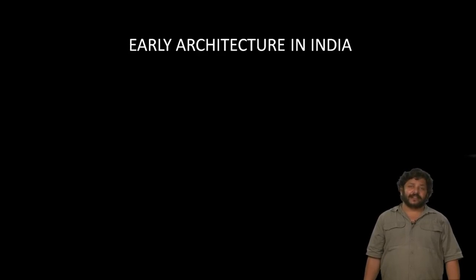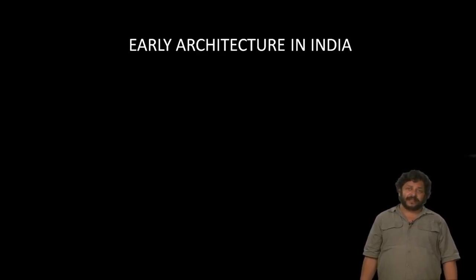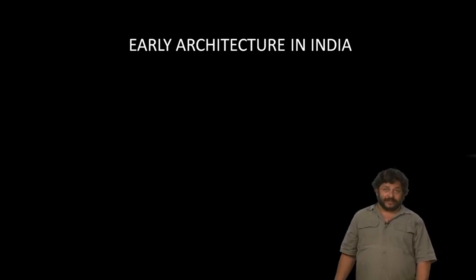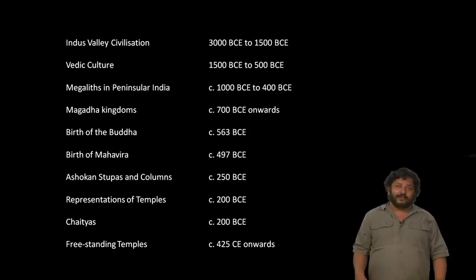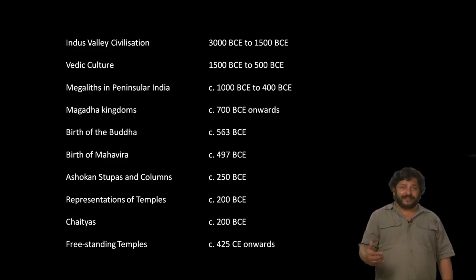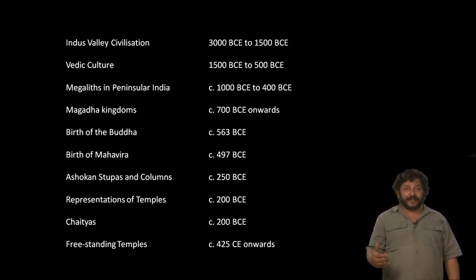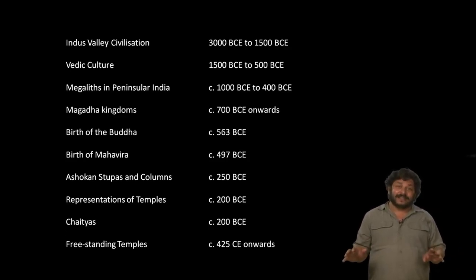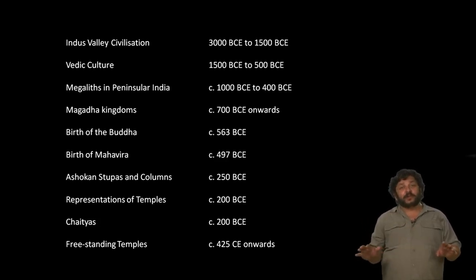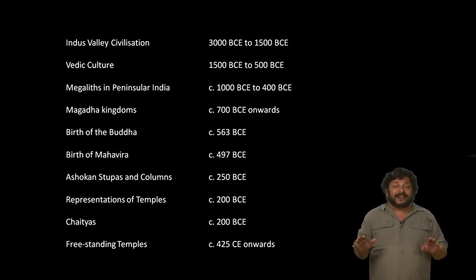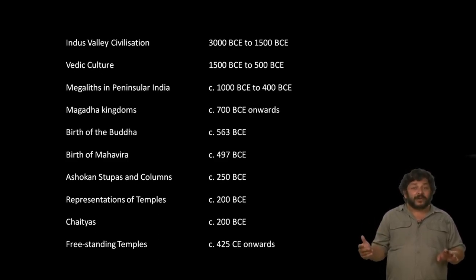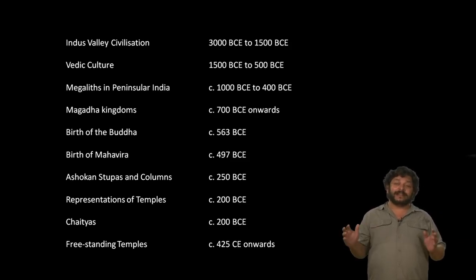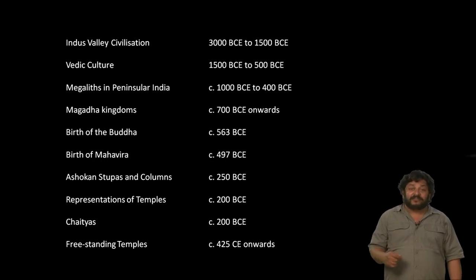Today we will look at early architecture in India, starting with the Bronze Age and going right up to the decline of Buddhism in India. The Indus Valley civilization, considered to be in the middle of the Bronze Age in the northwest corner of undivided India, was followed by a Vedic culture brought by people who moved in from the Caucasus mountains in Europe. Simultaneously in south India we have megaliths. These developments were followed by kingdoms in central and north India, the birth of the Buddha and Mahavira, the rise of the Mauryas with Emperor Ashoka, and then the beginnings of temple Hinduism.